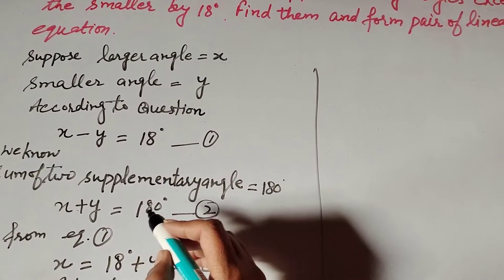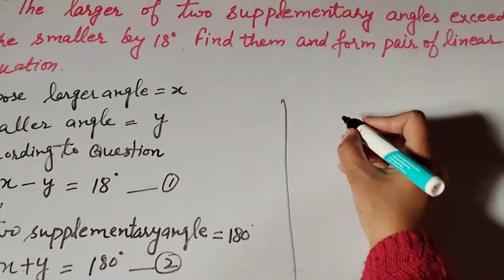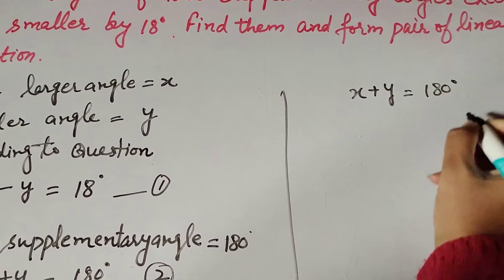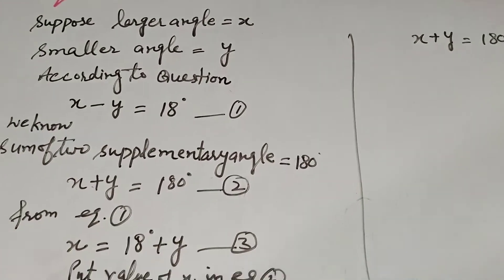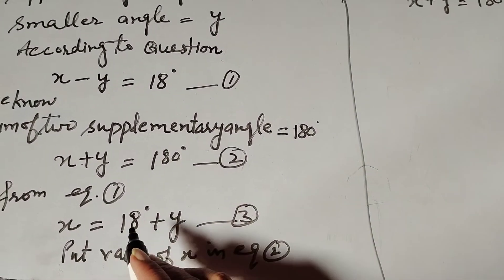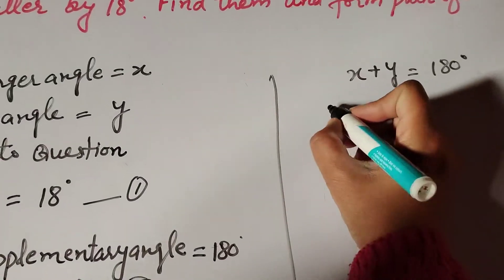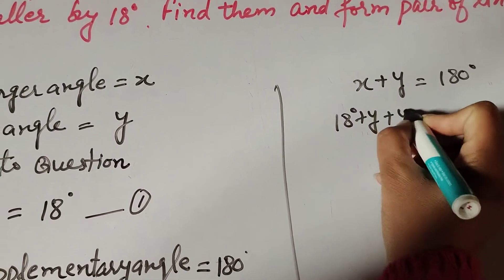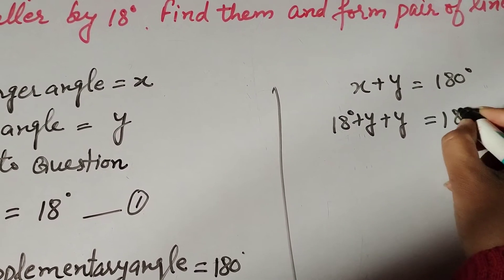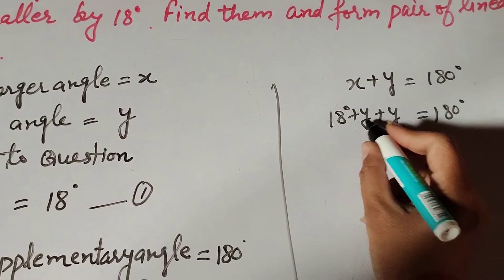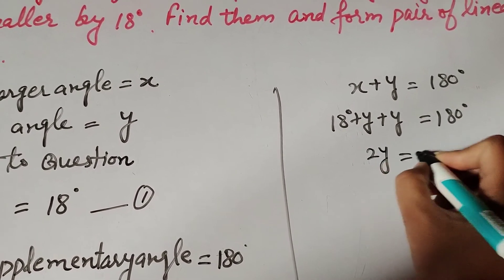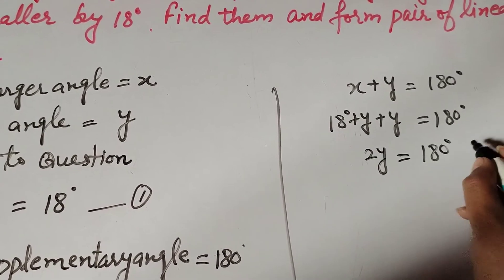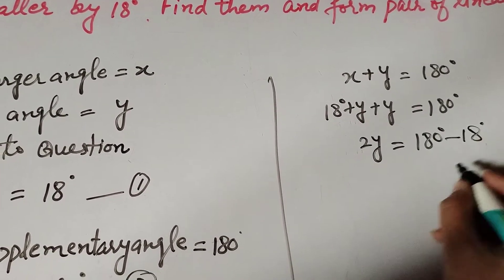Putting the value of x into equation number 2: x plus y equals 180. Substituting x equals 18 degrees plus y, we get 18 degrees plus y plus y equals 180 degrees. So y plus y equals 2y, and transposing 18 to the right-hand side gives minus 18.